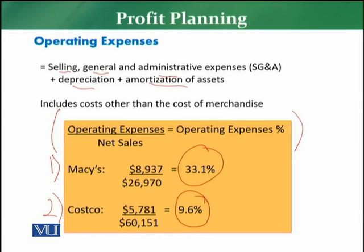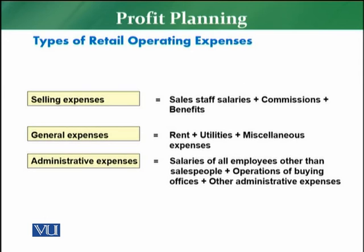Now a different picture is emerging. While Mackey's gross margin was very high, on the other side its operating expenses are also very high. So the picture is becoming clearer — will Mackey's be more profitable or will Costco be? Because Costco's operating cost is very much in control relative to its margins. Retailers calculate operating expenses in three types: selling expenses, general expenses, and administrative expenses.